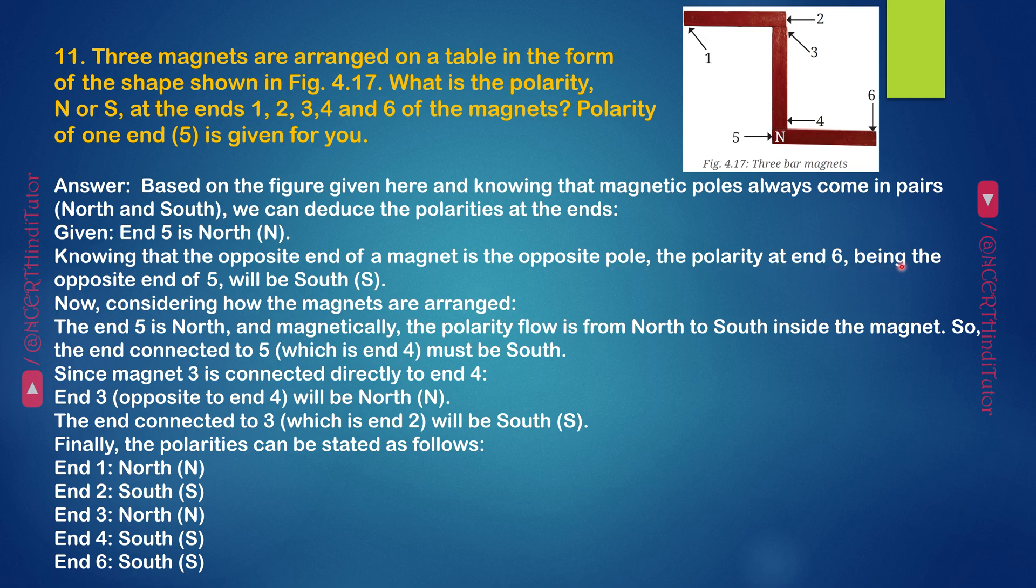Now, considering how the magnets are arranged, the end of 5 is north and magnetically the polarity flow is from north to south inside the magnet. So, the end connected to 5 which is N4 must be south. Since magnet 3 is connected directly to N4, N3 opposite to N4 will be north. The end connected to 3 which is N2 will be south. Finally, the polarities can be stated as follows.